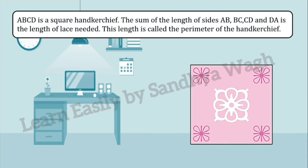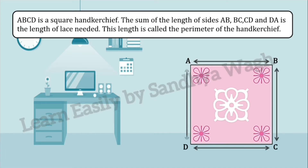A, B, C, D is a square handkerchief. The sum of the length of sides AB, BC, CD, and DA is the length of lace needed. This length is called the perimeter of the handkerchief.